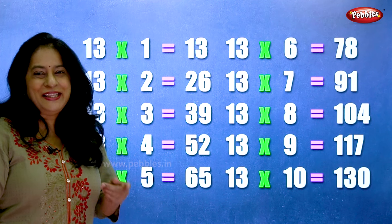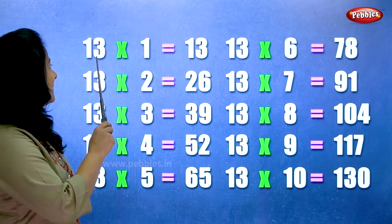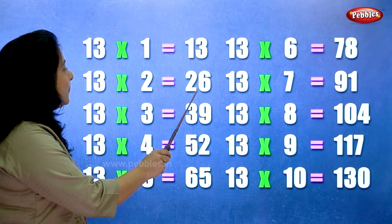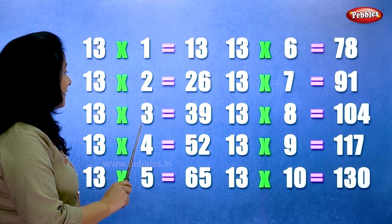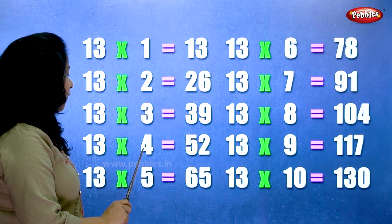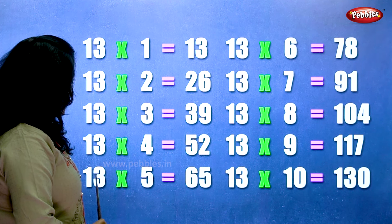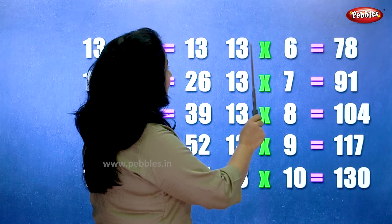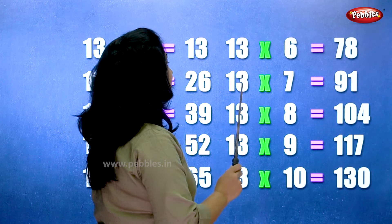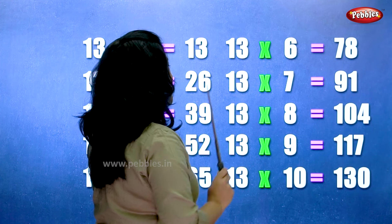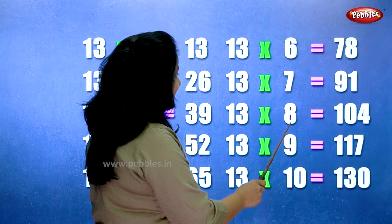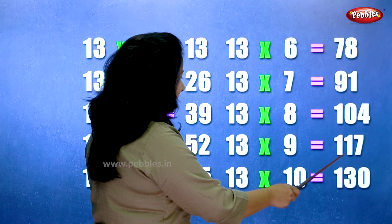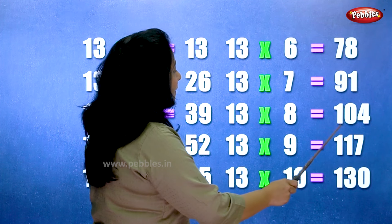Let's learn the table of thirteen one more time. Thirteen ones are thirteen. Thirteen twos are twenty-six. Thirteen threes are thirty-nine. Thirteen fours are fifty-two. Thirteen fives are sixty-five. Thirteen sixes are seventy-eight. Thirteen sevens are ninety-one. Thirteen eights are hundred and four. Thirteen nines are hundred and seventeen. Thirteen tens are one-thirty.